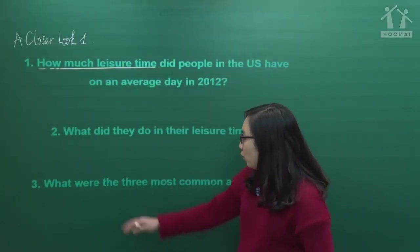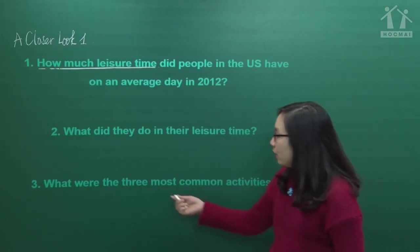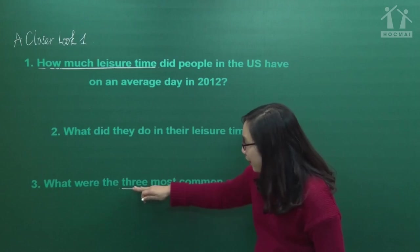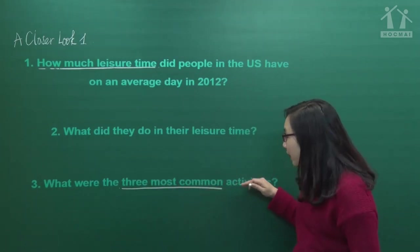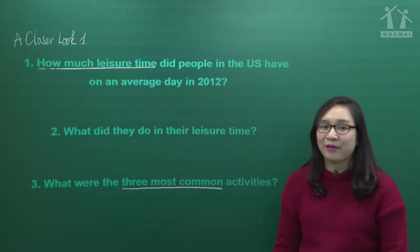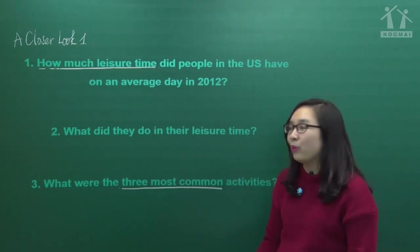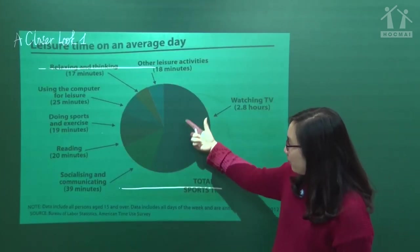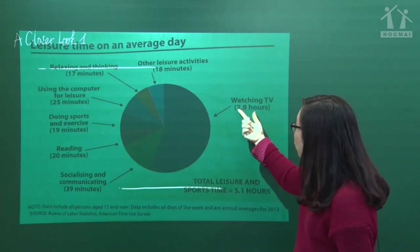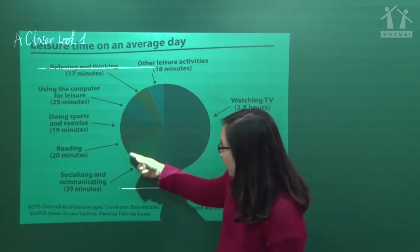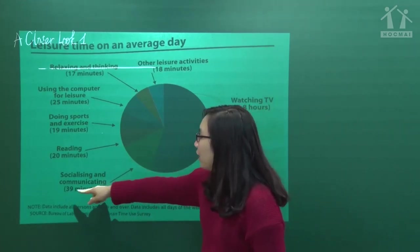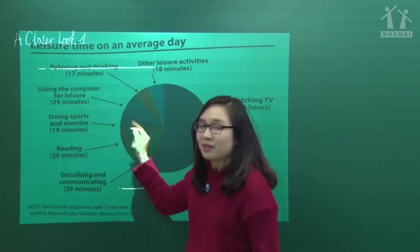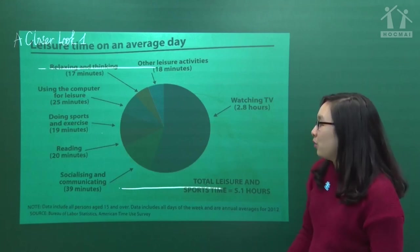Question number 3: what were the three most common activities? The keywords are 'three most common activities' - ba hoạt động phổ biến nhất, chiếm nhiều thời gian nhất trong một ngày. Looking at the chart: first, watching TV - 2.8 hours; second, socializing and communicating - 39 minutes; third, using the computer for leisure - 25 minutes.